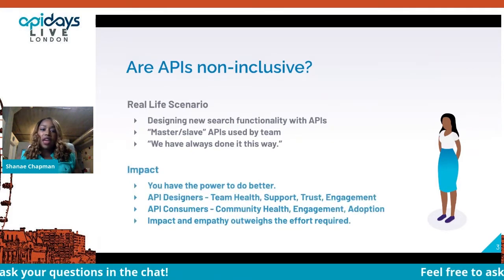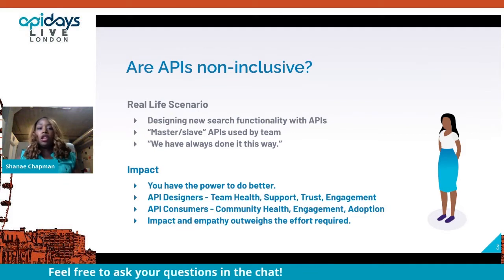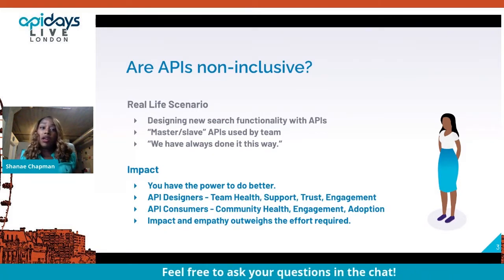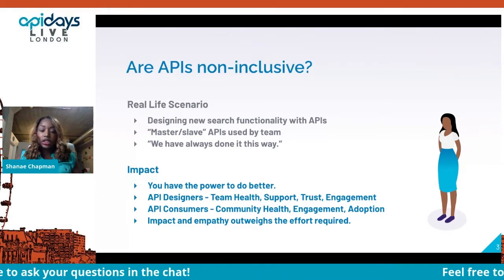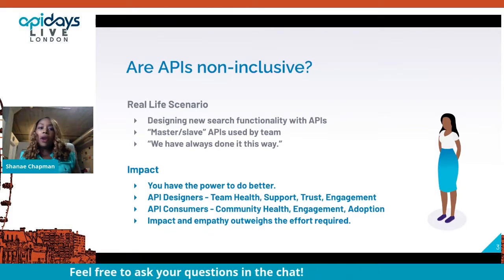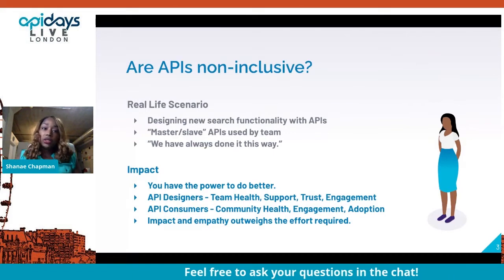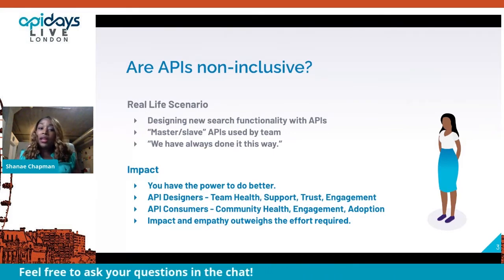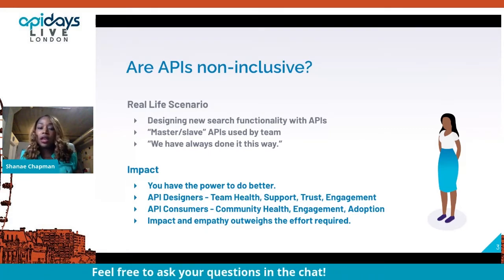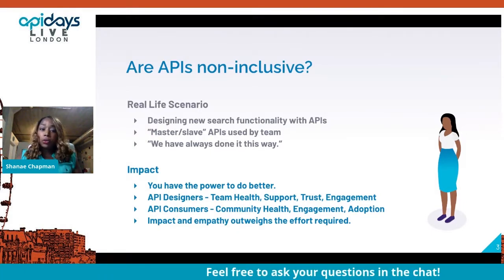I want to share with you today that you have the power to do better. Fortunately for me and that team, we moved forward and used alternative terms going forward. We were still able to talk about the relationships with the APIs, but in a way that the language focused on the relationship without bringing up harmful historical language. This is important for team health — when you're working with designers, product managers, and business stakeholders, establishing relationships where people belong, where you're practicing diversity, equity, and inclusion, that helps build trust and engagement.